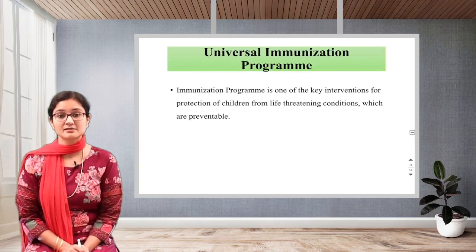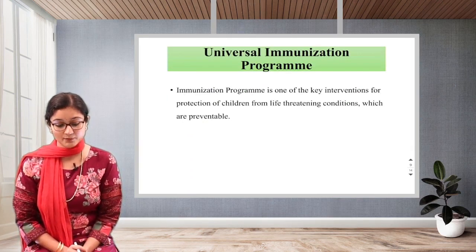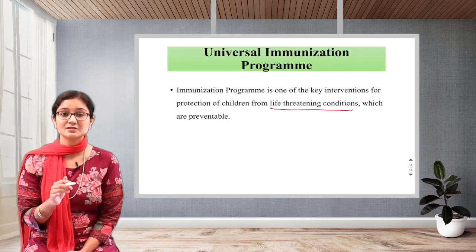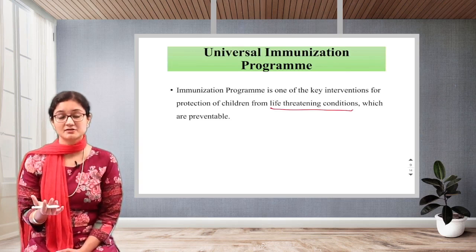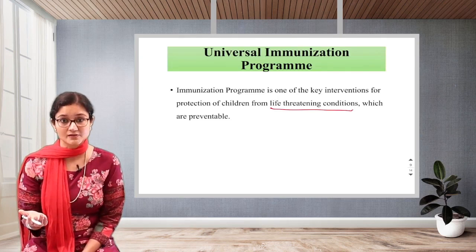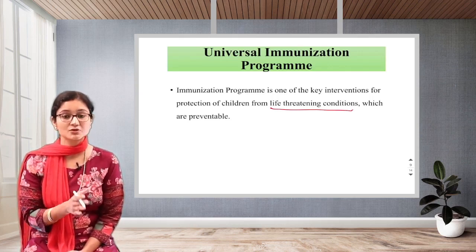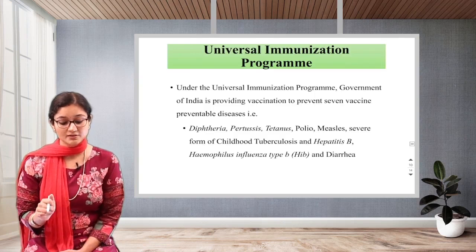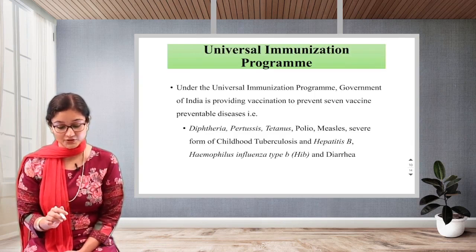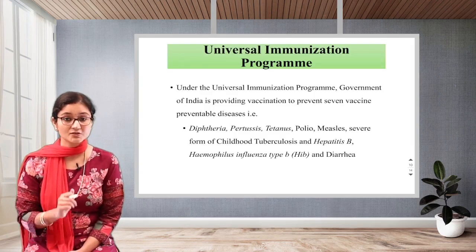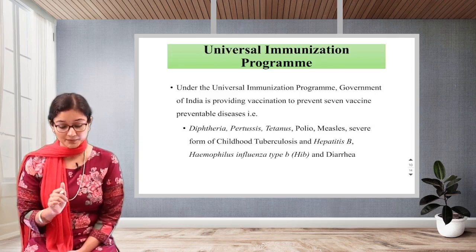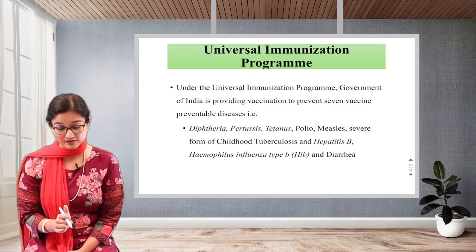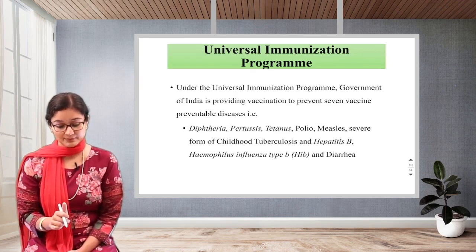Next, what you should know is the Universal Immunization Program. The immunization program is one of the key interventions for protection of children. We have this Universal Immunization Program to protect our children from life-threatening conditions, as children are commonly affected from respiratory disorders and other diseases. Under the Universal Immunization Program, the Government of India provides vaccination to prevent seven vaccine-preventable diseases: diphtheria, pertussis (also called whooping cough), tetanus, polio, measles, severe form of childhood tuberculosis, hepatitis B, Haemophilus influenzae type B, and diarrhea.